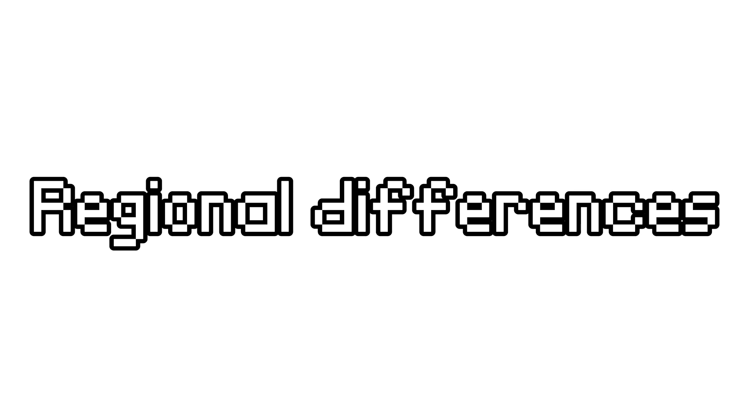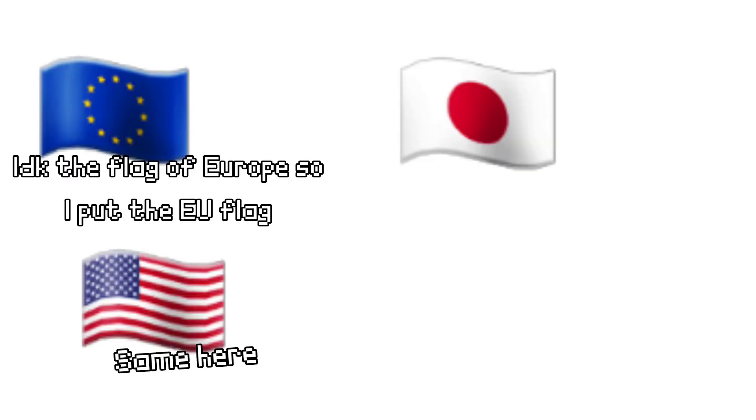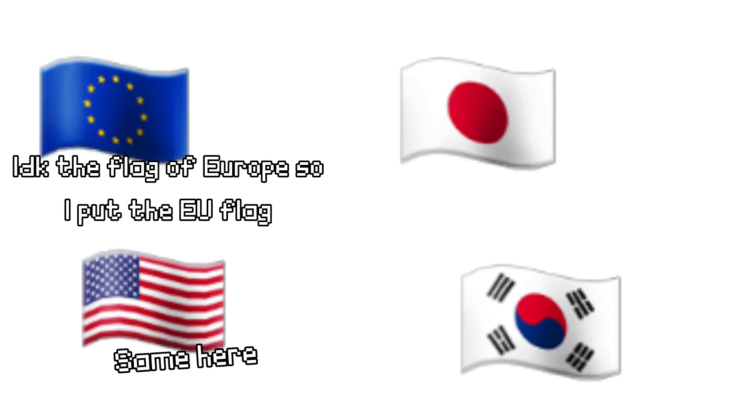As we do research in games, we realize that there are regional differences, which means not every game in the world has the same things. Today I'll talk about the regional differences in Wii Party, which is a game released in 2010. In particular, I'll analyze 4 versions: the European one, the American one, the Japanese one, and the Korean one. Let's see them.